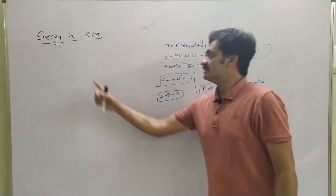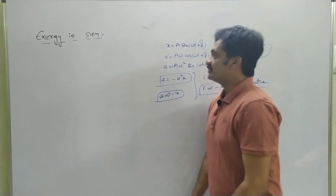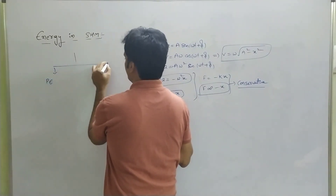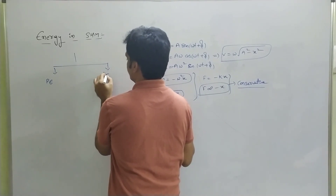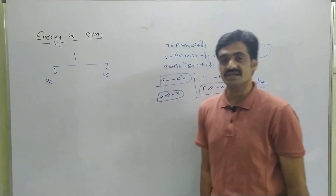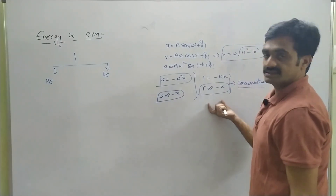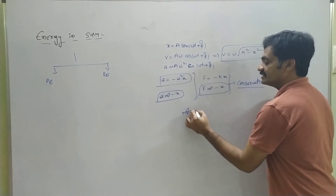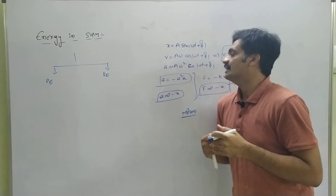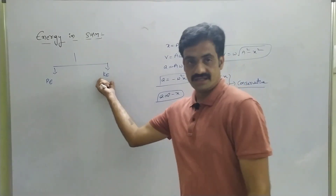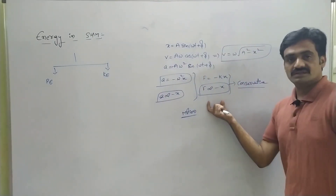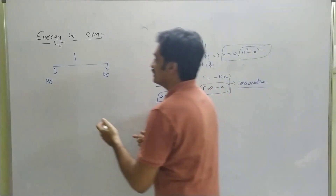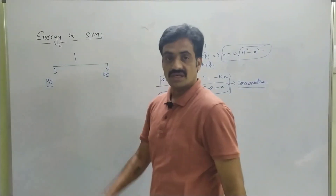As we consider energy in SHM, we can represent that this energy can be split up into two types: one is potential energy and the second one is kinetic energy. Mechanical energy can be represented as potential energy and kinetic energy. We consider kinetic energy when the body is in motion — when the body is oscillating. Since the force is conservative and attains a particular height in oscillations, SHM possesses potential energy.